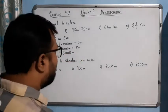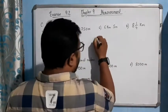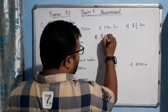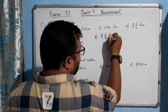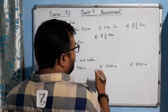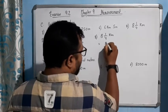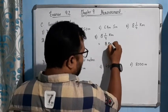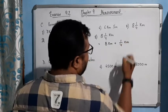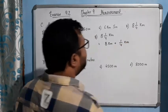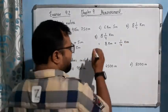Now for number four: 8 and 1/4 kilometers. It means 8 kilometers plus 1/4 kilometer. Try to understand here: 8 and 1/4 means 8 kilometers and 1/4 kilometer. Is it clear?